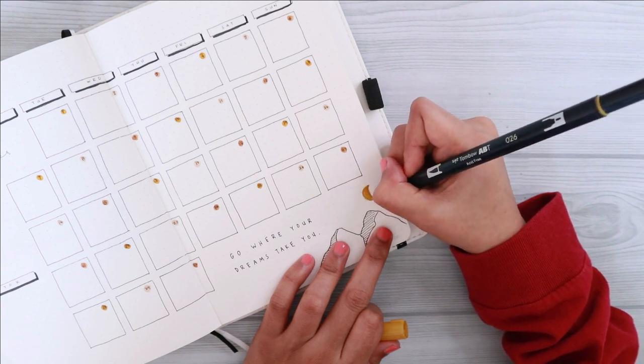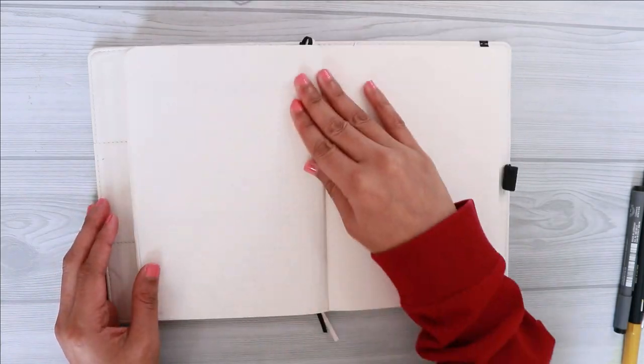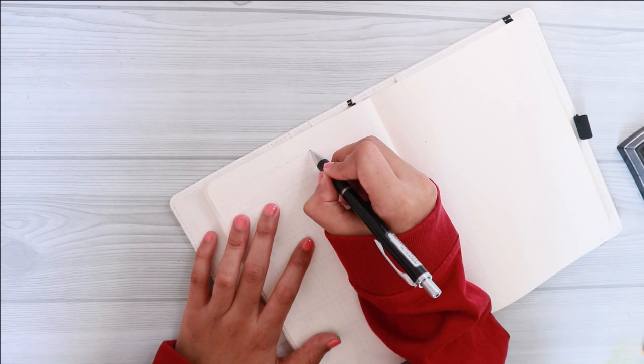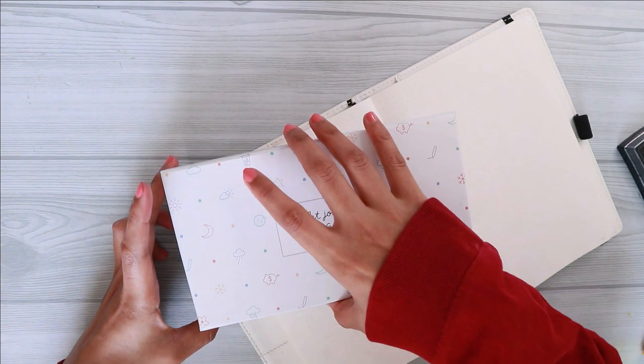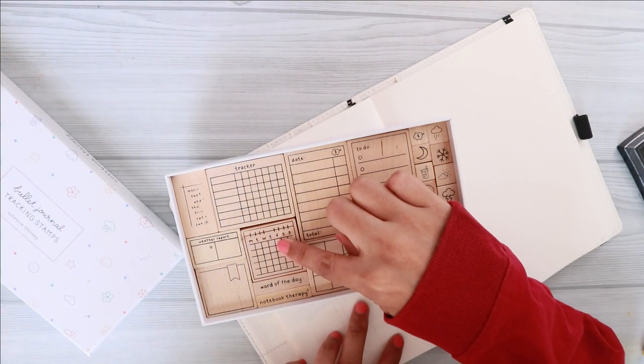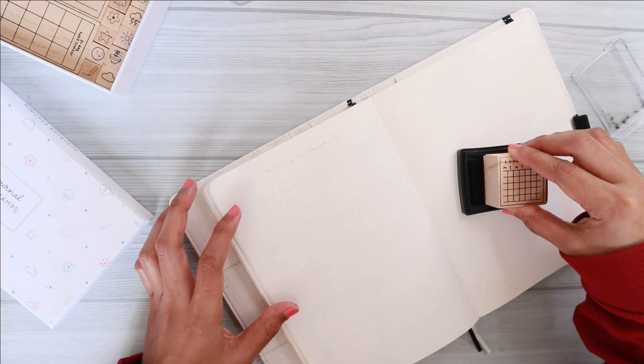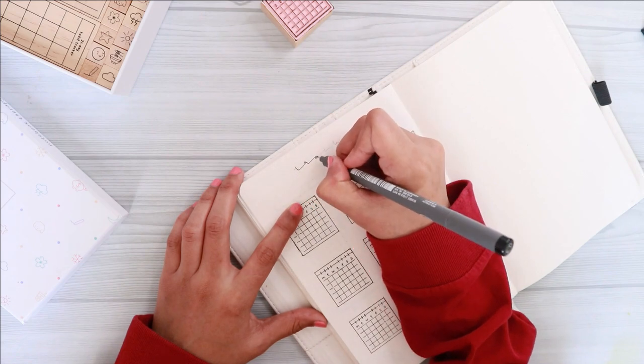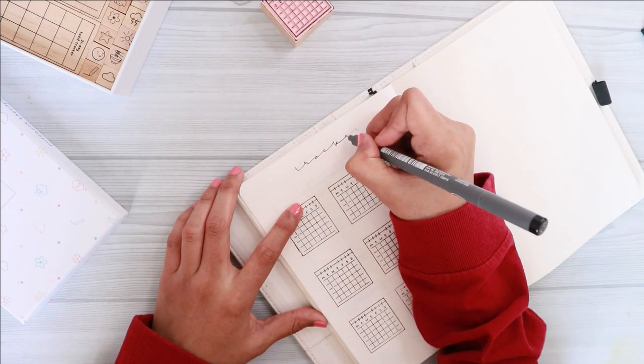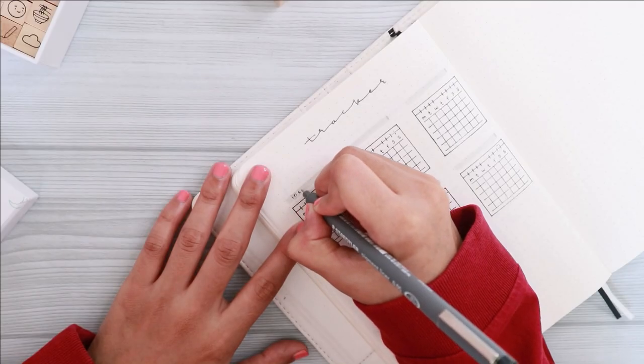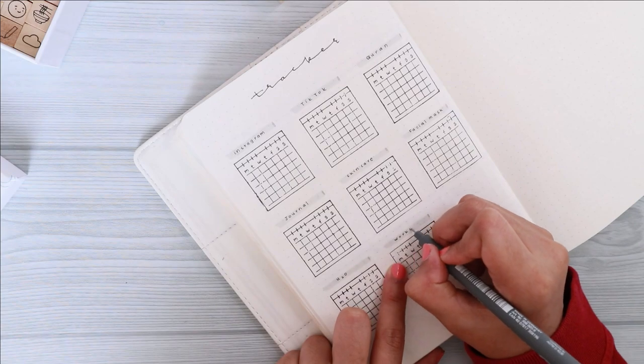The next page is my habit tracker page. So for this tracker, I'm using the Tracking Stamps set from Notebook Therapy. This set has a total of 25 different stamping that are very cute and useful for your bullet journal. Not only that, the box that comes with the stamps is also very cute. I am constantly falling in love with this set the moment I laid my eyes on it. If you guys are interested to try this set out, the link to Notebook Therapy's website is included in the description down below as well.